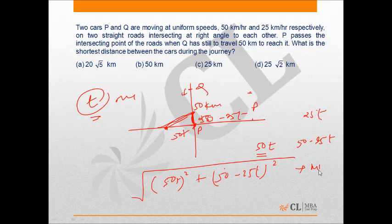This is to be minimized, which means square of this is to be minimized. On further simplification this can be written as 5 root into t minus 2 upon root 5 whole square plus 16 by 5.